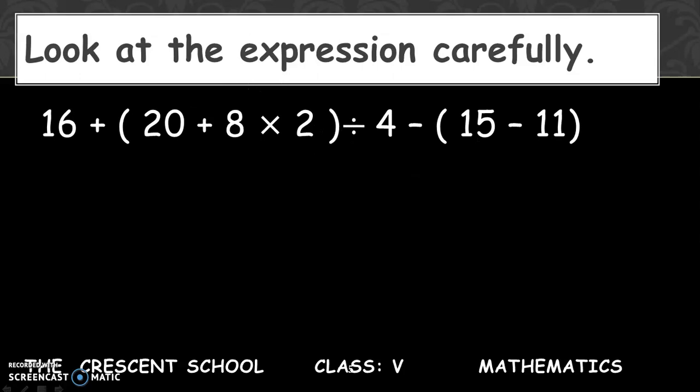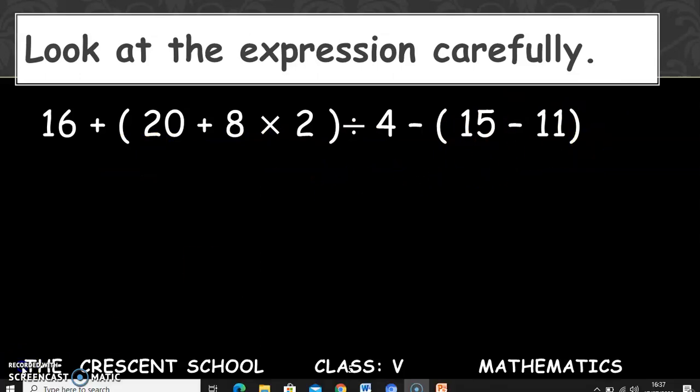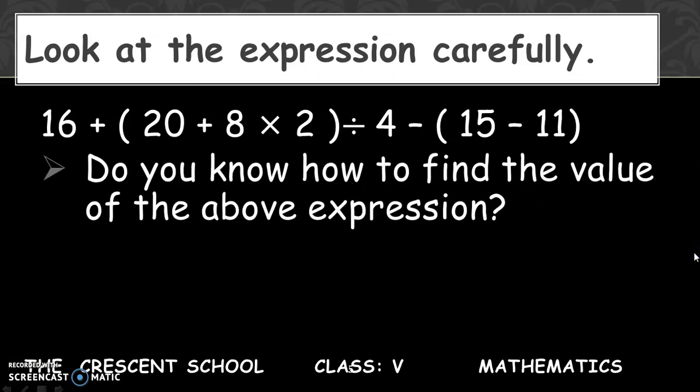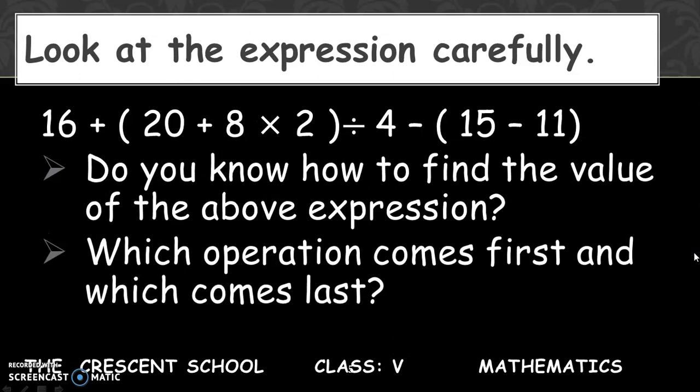Look at the expression carefully. In this expression, 16 plus bracket start 20 plus 8 multiply by 2 bracket close, divided by 4, minus bracket start 15 minus 11 bracket close. As you can see that there are two brackets, first one and second one. Now how can you solve this expression? Do you know how to find the value of the above expression? Which operation comes first and which comes last?